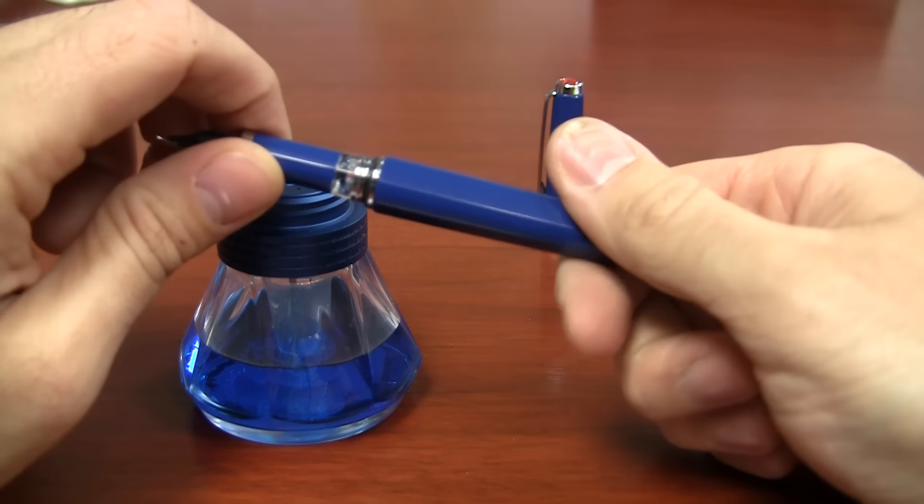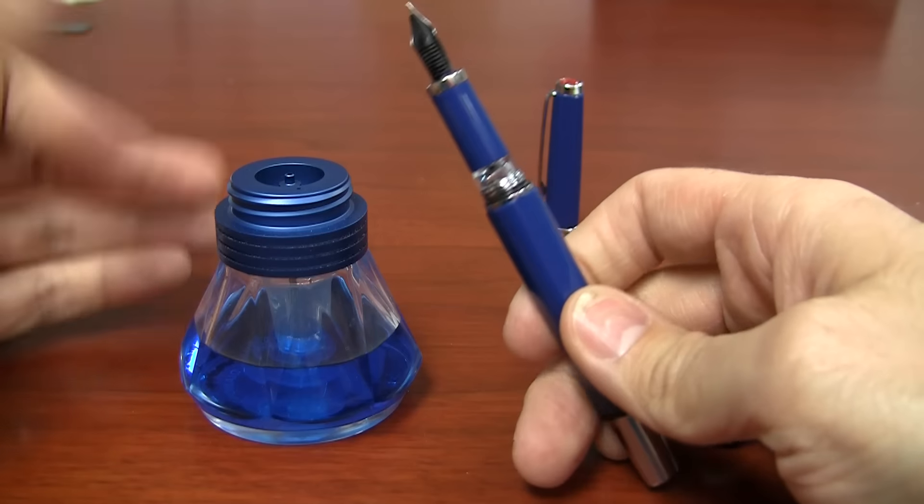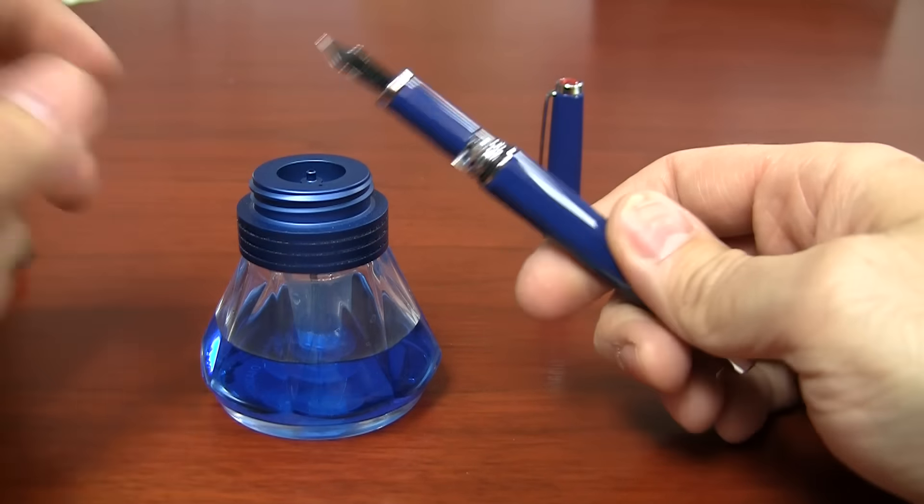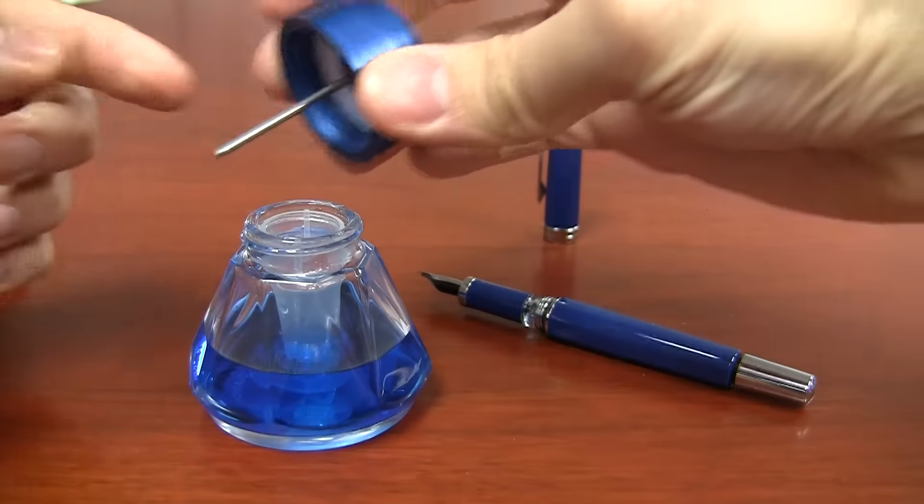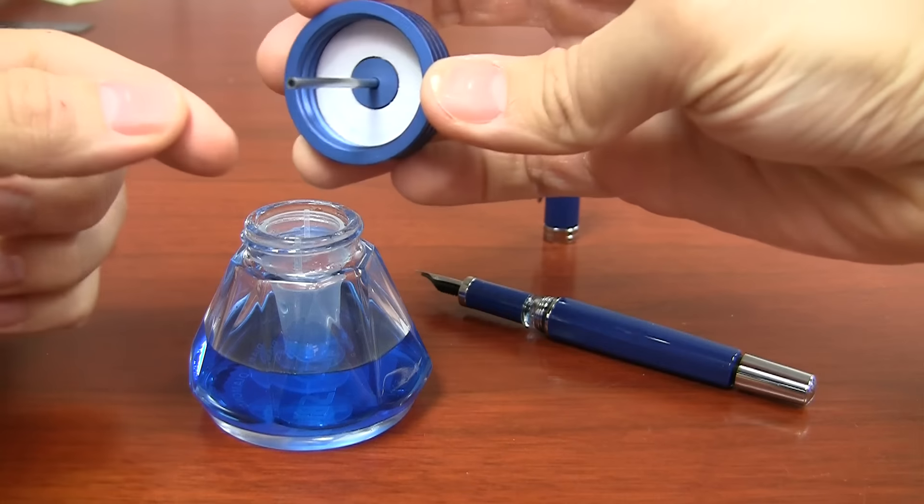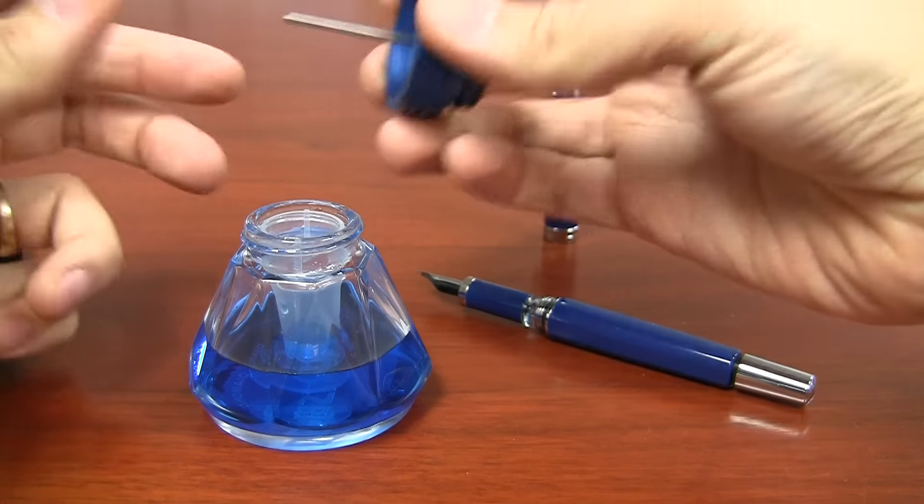And the cool thing about this is that you don't get your hands all inky. You don't get a mess at all. So the way that this thing works is it has this kind of rod that goes down here and it's got a hole in it. It's basically a straw.